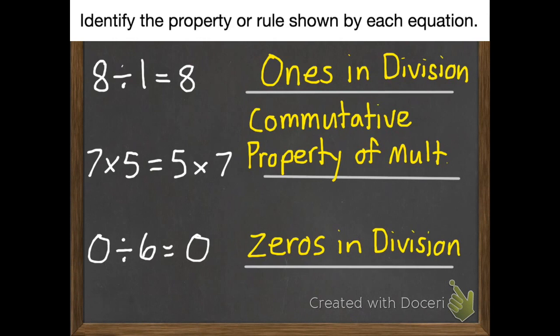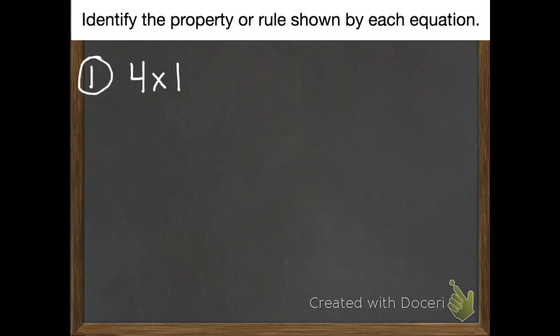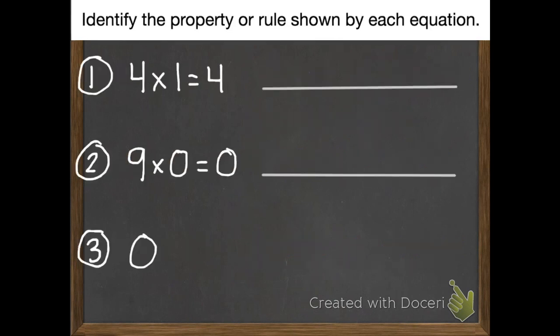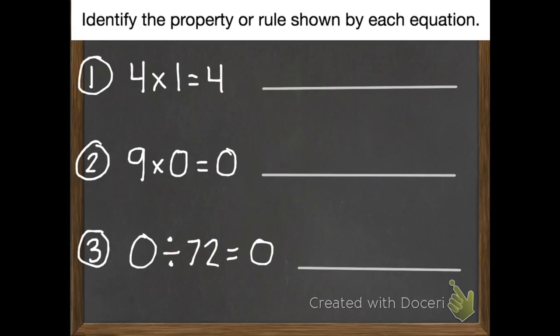Here are your 3 problems and we'll check these ones tomorrow. Number 1: 4 times 1 equals 4. Number 2: 9 times 0 equals 0. And number 3: 0 divided by 72 equals 0.